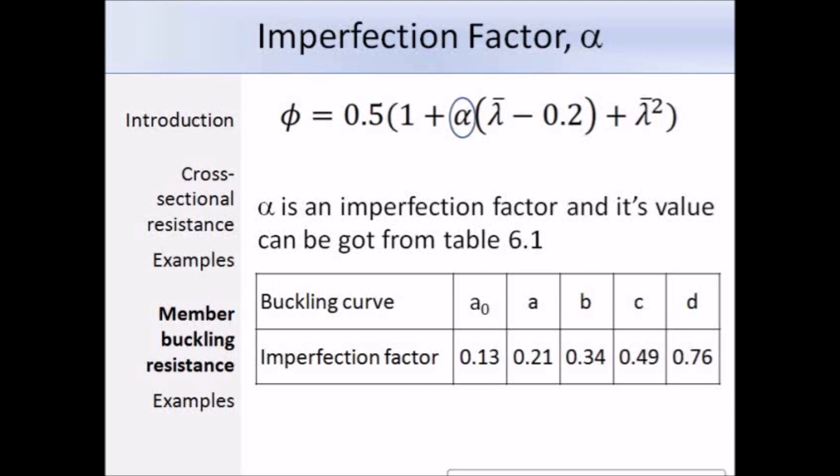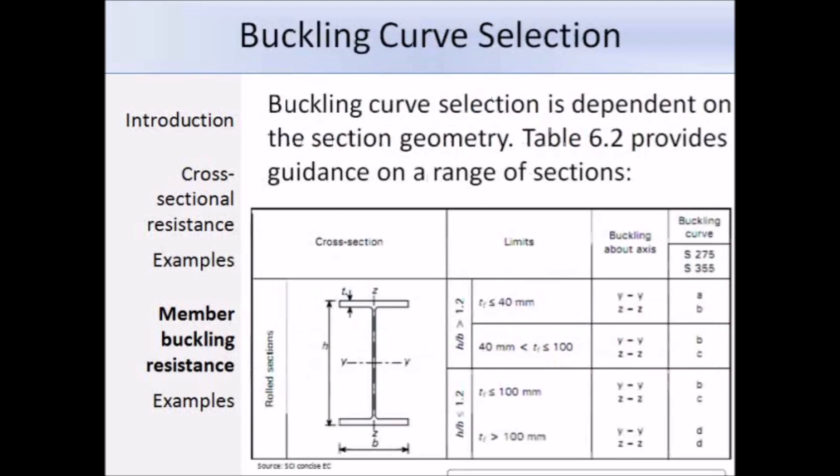Here we have the top of table 6.2 and it's telling us the buckling curves that we need to use for a rolled section. We have a set of limits that depend on the height and breadth of the section. We also need to look at the thickness of the flange and decide which axis the buckling will be about and the steel grade. If you know all of those, we can easily read off the required buckling curve, refer to table 6.1, and get the value alpha.